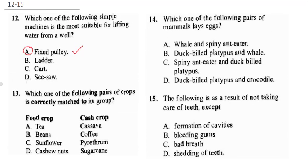Question 13 asks which pair of crops is correctly matched to each group. Tea is not a food crop, so it's not matched correctly. Cassava is actually a food crop while coffee is a cash crop. So the correct answer is B — it is correctly matched.